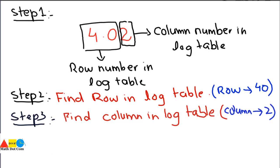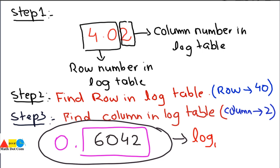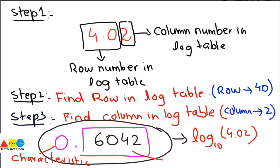The number we get through the log table is 6042 — this is the decimal part, the mantissa, of the common logarithm. The integral part, the characteristic, found earlier is 0. Putting the decimal point between them gives 0.6042. This matches the calculator result for log₁₀(4.02) = 0.6042. The characteristic 0 was found by inspection, and the mantissa 0.6042 was found using the log table.